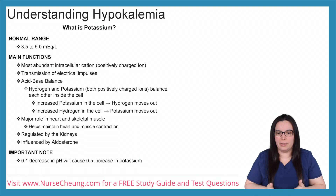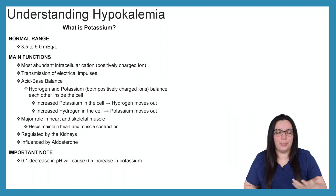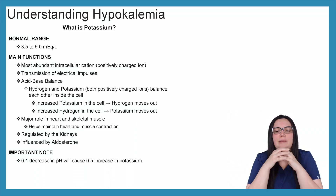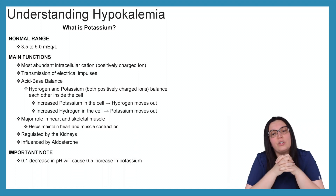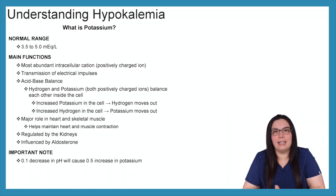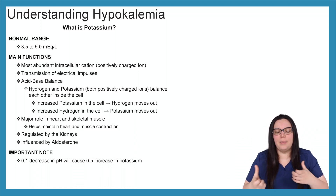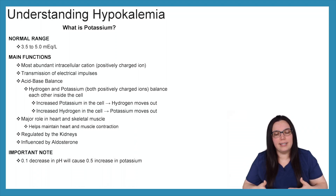What's a normal range for potassium? It's 3.5 to 5 milliequivalents per liter. The main functions of potassium: it is the most abundant intracellular cation, it is a positively charged ion, it transmits electrical impulses, and it also helps with our acid-base balance. Both potassium and hydrogen are positively charged ions and they balance each other out — they can both be found in the cell and outside of our cells.